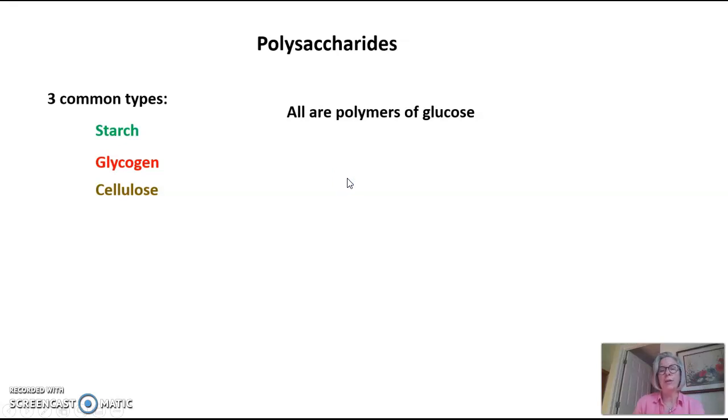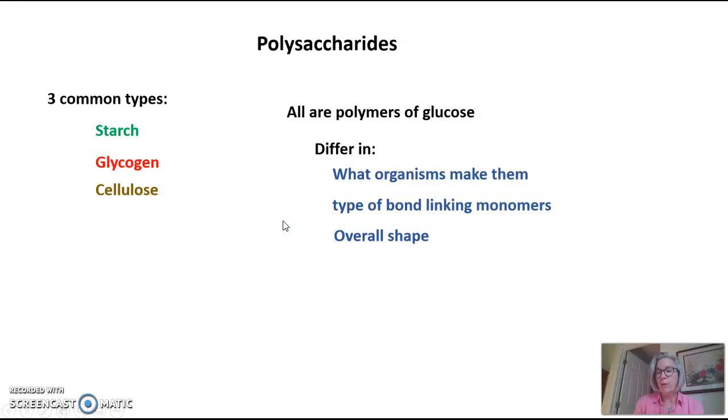We'll talk about starch, glycogen, and cellulose. These are all polymers of glucose, but they do have some differences. They differ in which organisms make them, the type of bond linking the monomer (and the monomer is always glucose), the overall shape, which organisms can digest them, and their function.